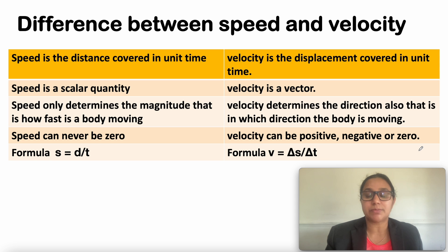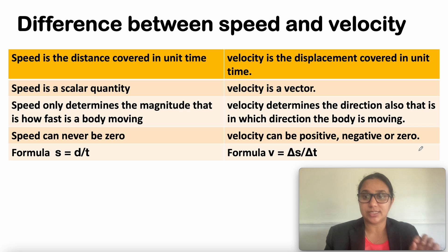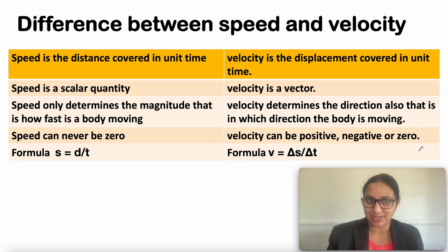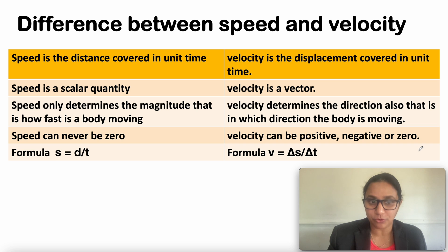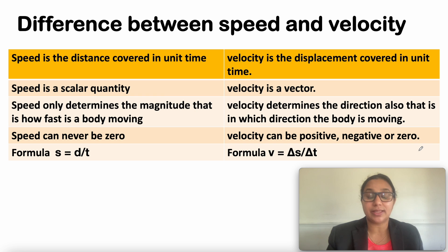The differences between speed and velocity: speed is the distance covered in unit time, but velocity is the displacement covered in unit time. Speed is a scalar quantity; velocity is a vector quantity. Speed only determines magnitude — how fast a body is moving — while velocity determines direction as well. Speed can never be zero, but velocity can be positive, negative, or zero. The formula for speed is S = d ÷ t, while for velocity it is ΔS ÷ ΔT.